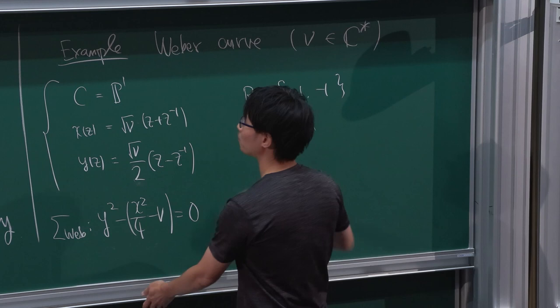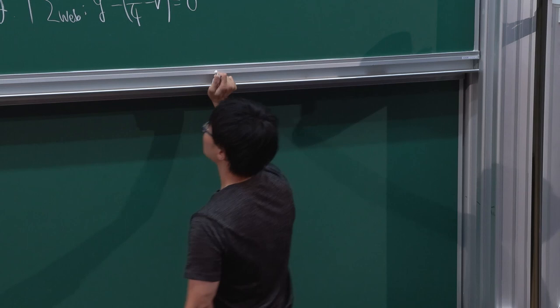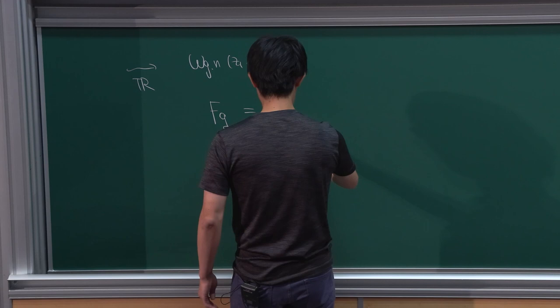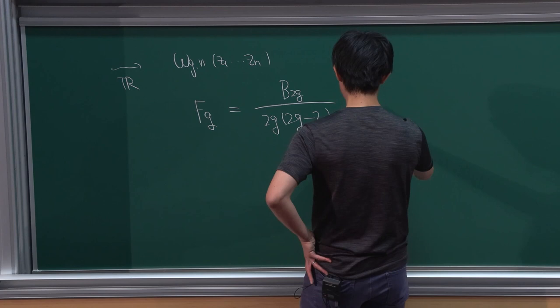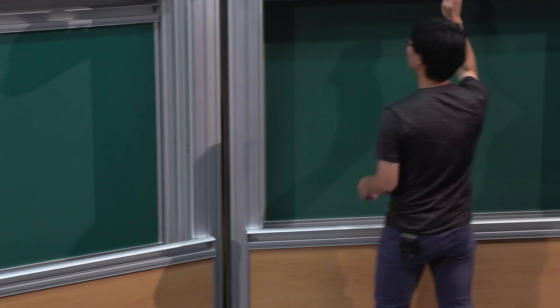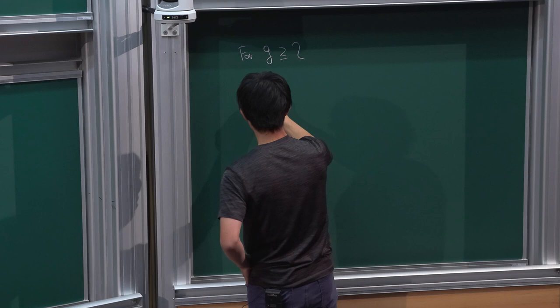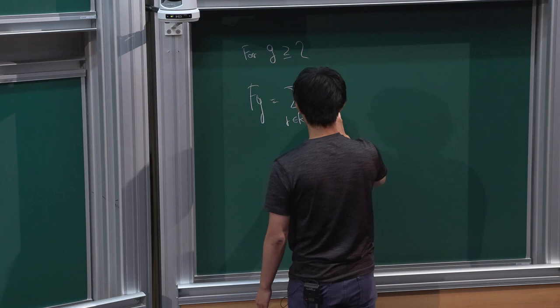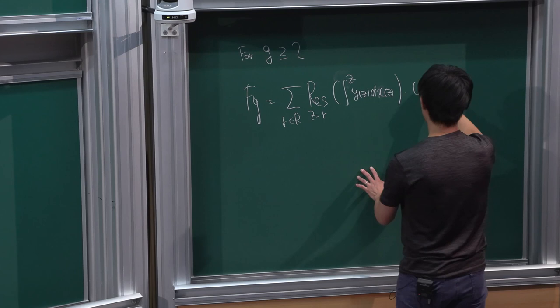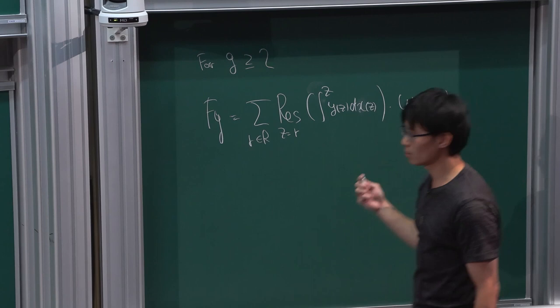If you run the topological recursion for this example, you obtain omega_{g,n} and F_g. In this case, F_g is easier to describe. It is given by an explicit series for g greater than or equal to 2. The definition of F_g for g ≥ 2 is: sum over ramification points of the residue of the primitive of Y dx times omega_{g,1}.